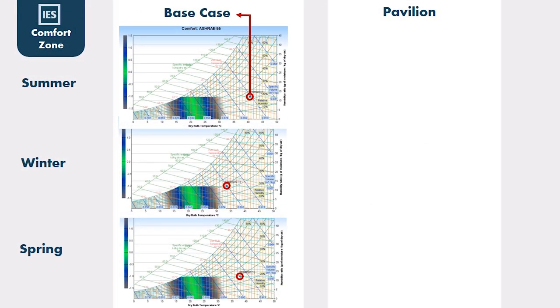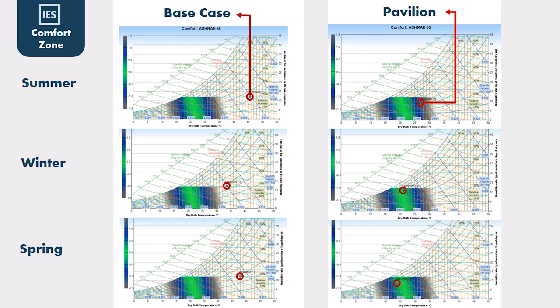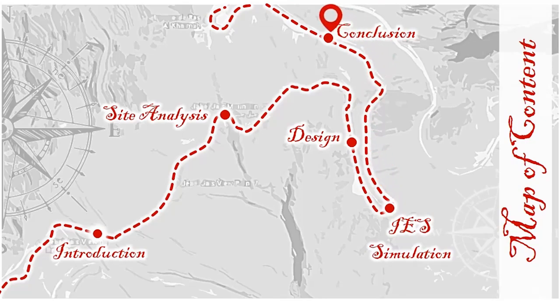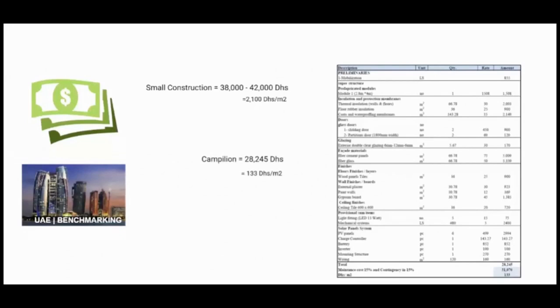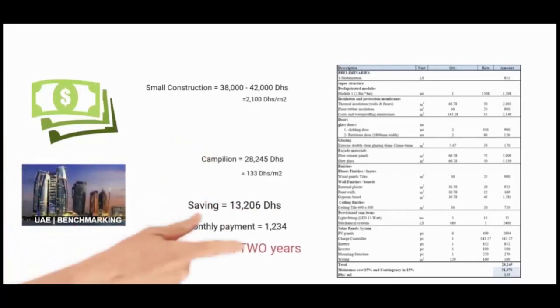We managed to enhance comfort within the pavilion as shown in the psychometric chart. The base case was outside the comfort zone during all seasons, while the pavilion provides a comfortable space during all seasons. According to Abu Dhabi and Dubai construction cost benchmarking, the cost range for small construction is 38,000 to 42,000 dirhams, equal to 2,100 dirhams per square meter. After feasibility analysis, the Campillion would cost around 28,200 dirhams — 133 dirhams per square meter — with a payback in 2 years and savings of around 13,800 dirhams.